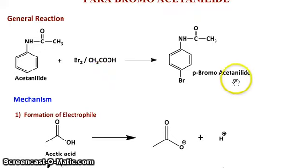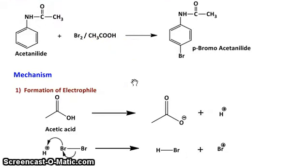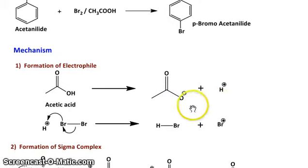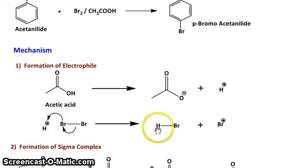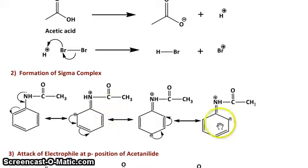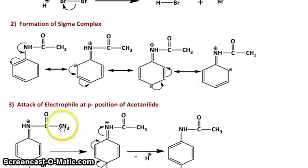It gives para-bromoacetanilide. In the acetanilide mechanism, the formation of the electrophile involves acetic acid, and after deprotonation, these protons form HBr and Br+, followed by formation of the sigma complex. You can see the resonating structures — this is the resonating structure — showing attack of the electrophile at the para position of acetanilide.